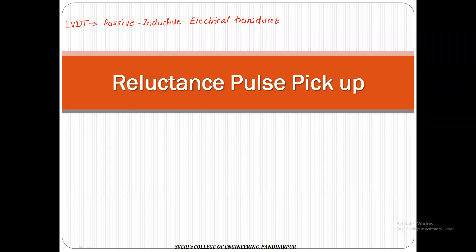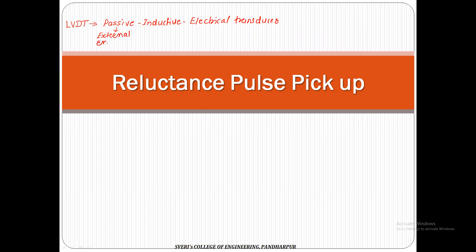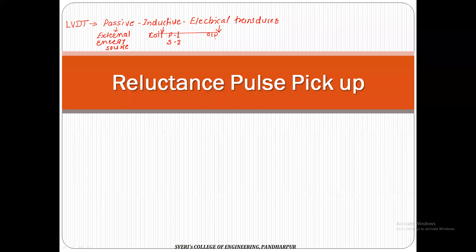Let's see why it is called passive — because it requires an external energy source to be connected to the LVDT. Why is it called inductive? Because it consists of a coil. And why is it called electrical? Because the output of LVDT is in the form of an electrical signal. That's why it is called a passive inductive electrical transducer.